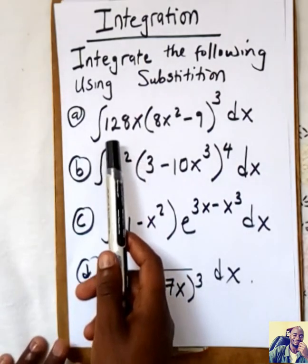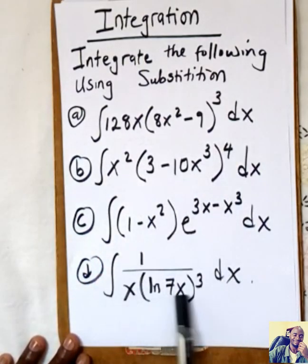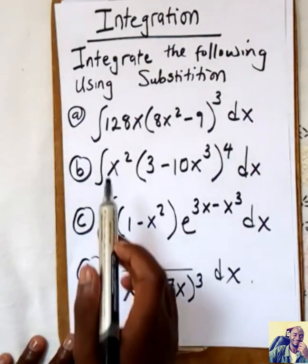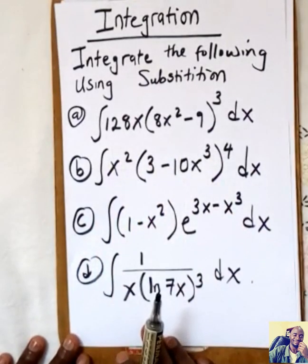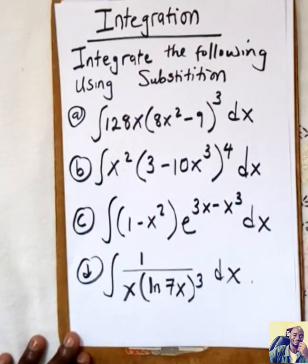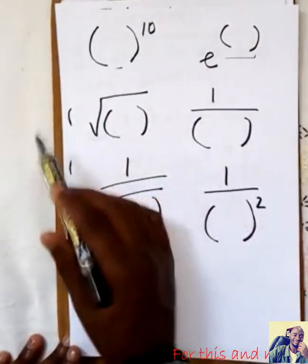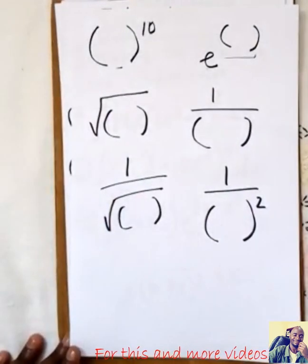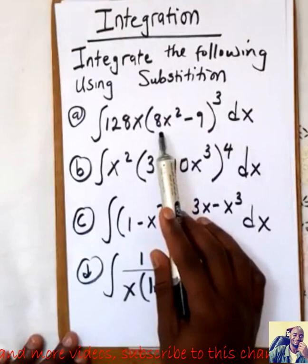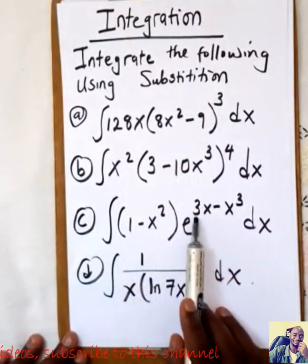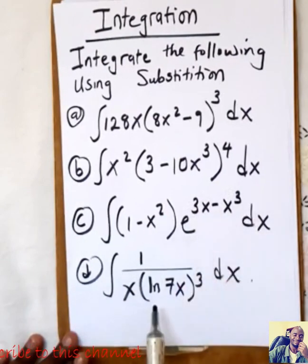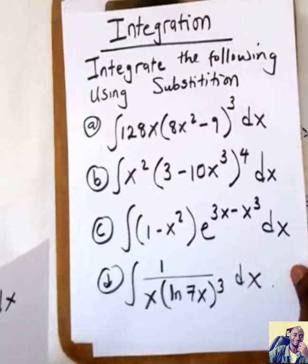Normally you are going to be given a product of functions, and you have to make one of these functions U so you can substitute. How do you know what to make U? Every time you use U-substitution, you look for something on a power, an E, a square root — you make that U. In example A we make the inner expression U, and for E to the power something, that power becomes U.